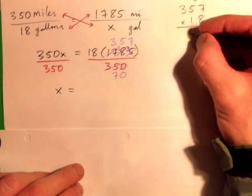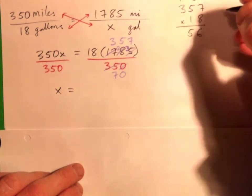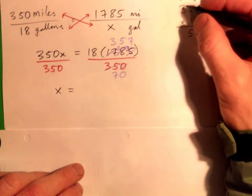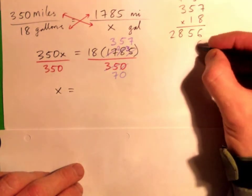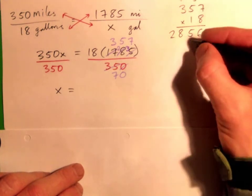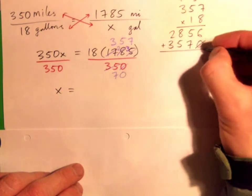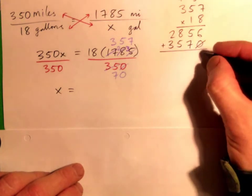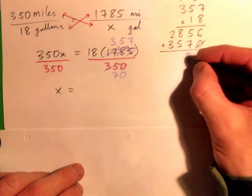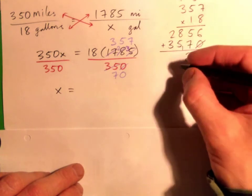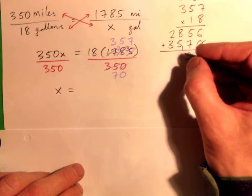357 times 18. 8 times 7 is 56, carry 5. 8 times 5 is 40 and 5 is 45. 8 times 3 is 24 and 4 is 28. Put down a 0, multiply by 1: 7, 5, 3. And then add. So 6, and that's 12 carry 1, and that's 14 carry 1, and that's 6.